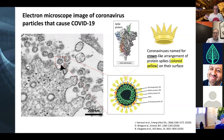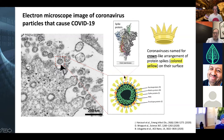Coronaviruses are named for their crown-like structure. They have spike protein spikes, kind of like the spikes on a crown. You can see in the schematic these are the spikes, and up above is the actual spike protein itself. Most of the current efforts for therapeutics are targeting that spike.